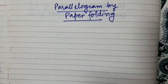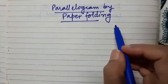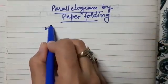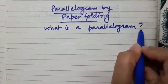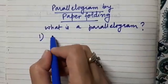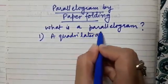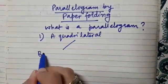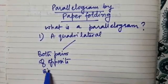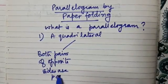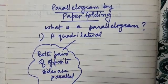Hello dear students, let us now do another activity in which we will be making a parallelogram by paper folding. I hope you know what a parallelogram is. Can you define what a parallelogram is? A quadrilateral in which both pairs of opposite sides are parallel is called a parallelogram. So this is one definition of a parallelogram.